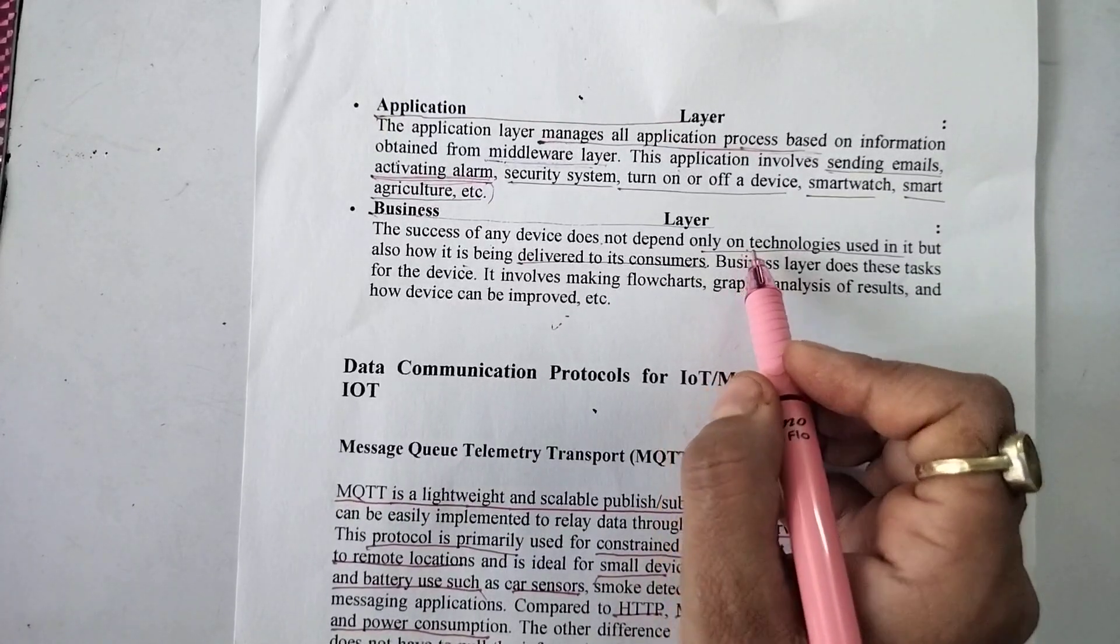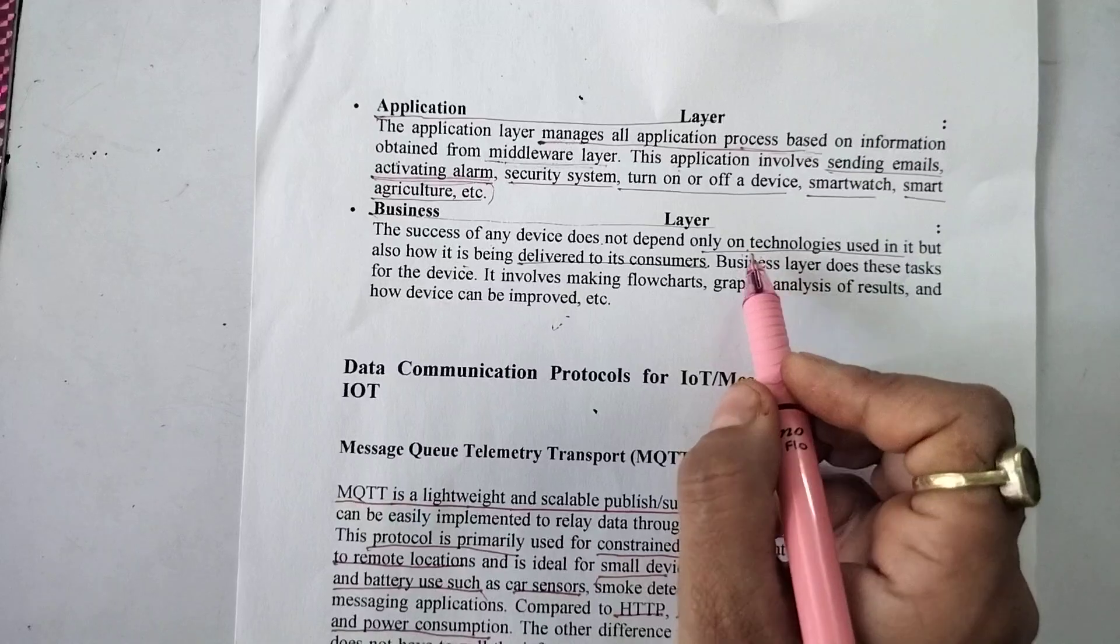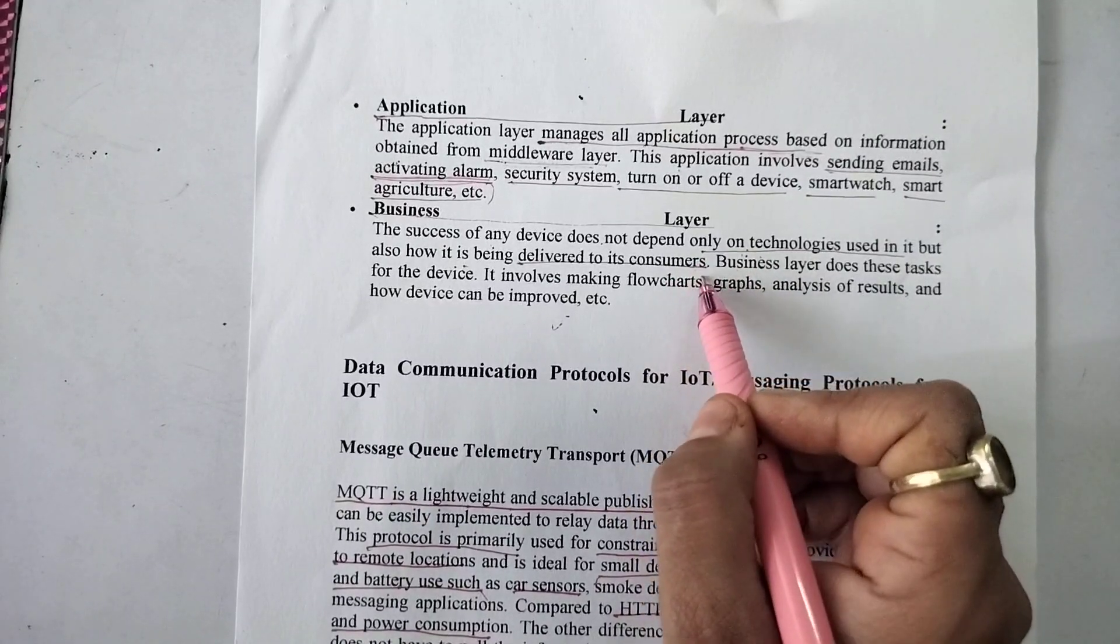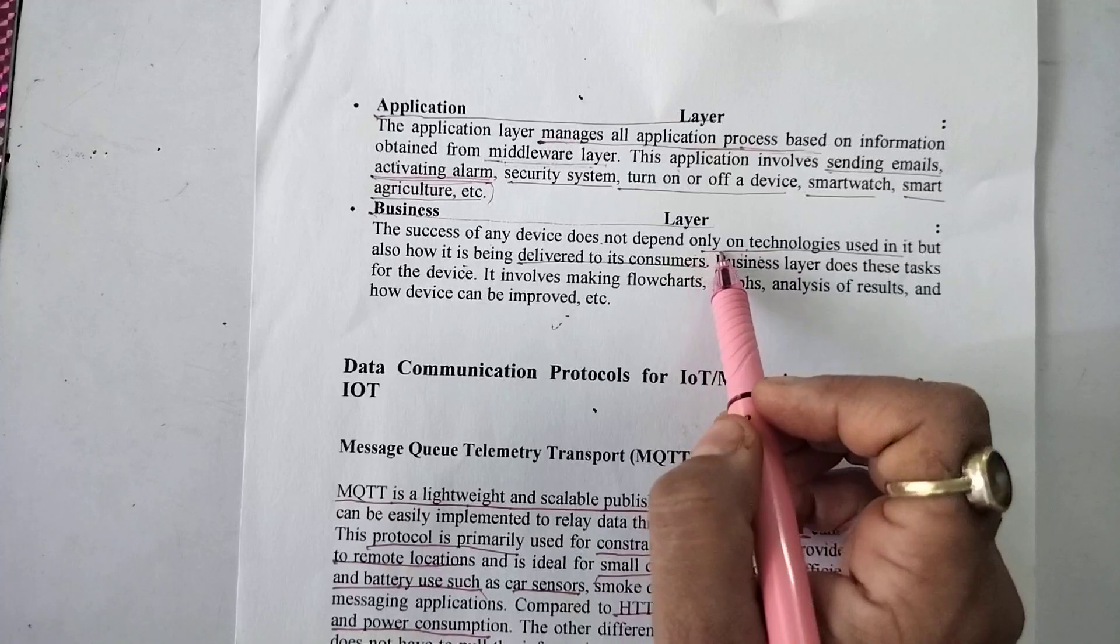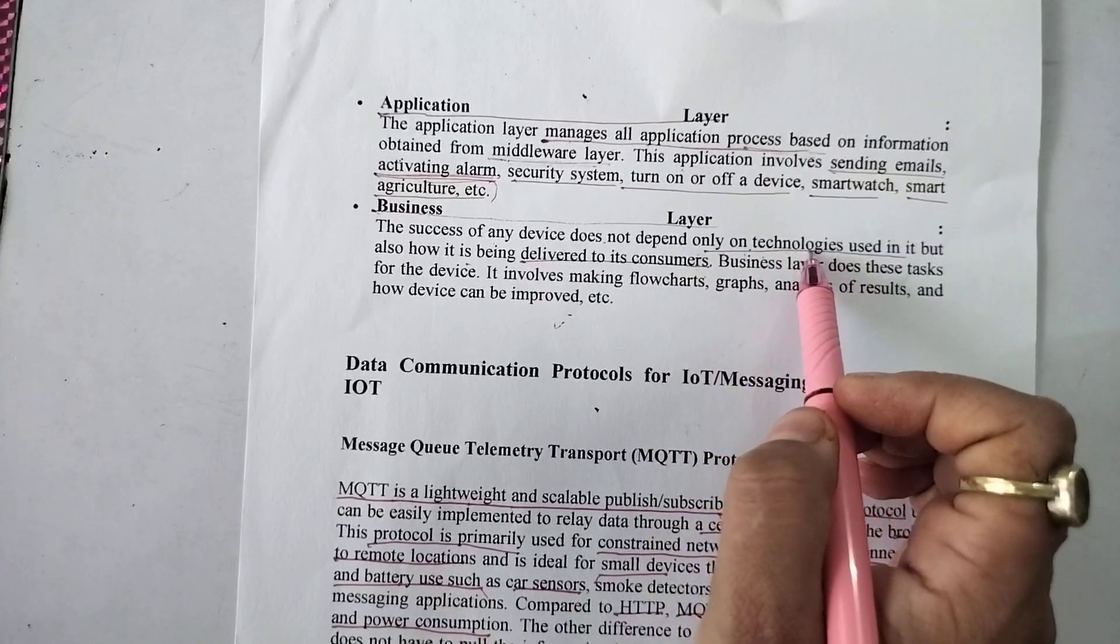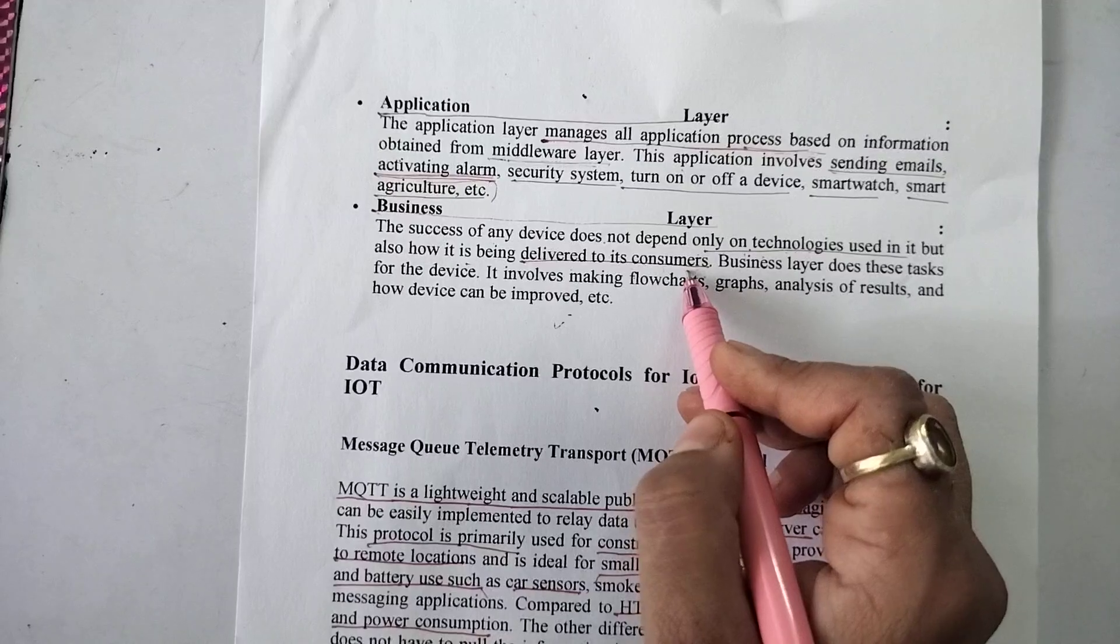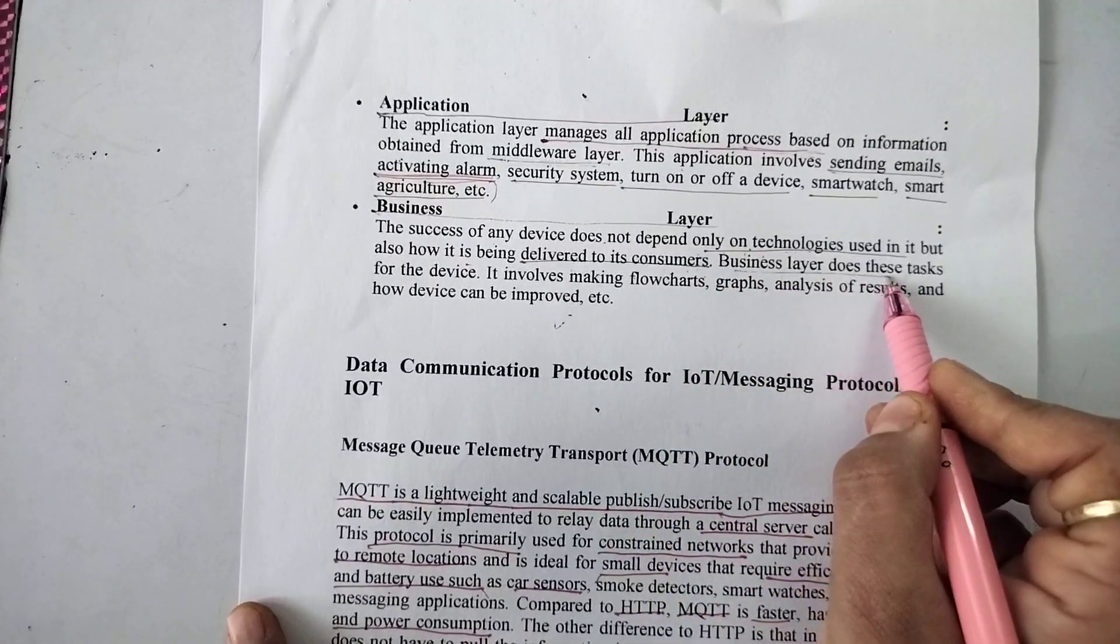The first thing that comes into play is your technology, but then if it is not delivered properly to the consumers, it would be a failure. Obviously, the success not only depends upon the technologies used, but also how it is delivered to the consumers. Business layer does these tasks.